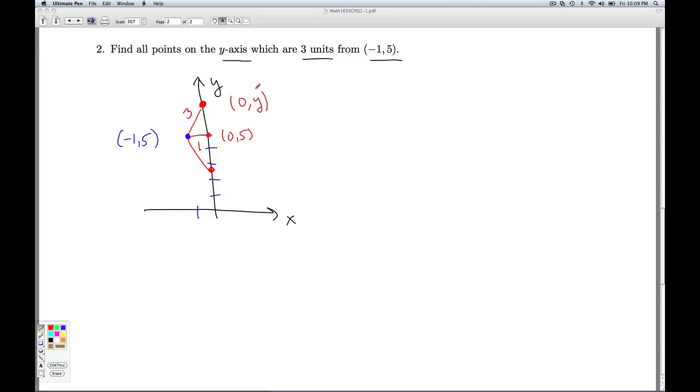So I'm looking for the magic y value so that the distance from (-1, 5) to this point is exactly 3 units. So let's write that down. I need the distance from (-1, 5) to the point (0, y) to equal 3. And now I invoke the distance formula. What is the distance formula? You take the difference of the x values, square them, add to that the difference of the y values squared, add them up, take the square root. That has to be equal to 3.